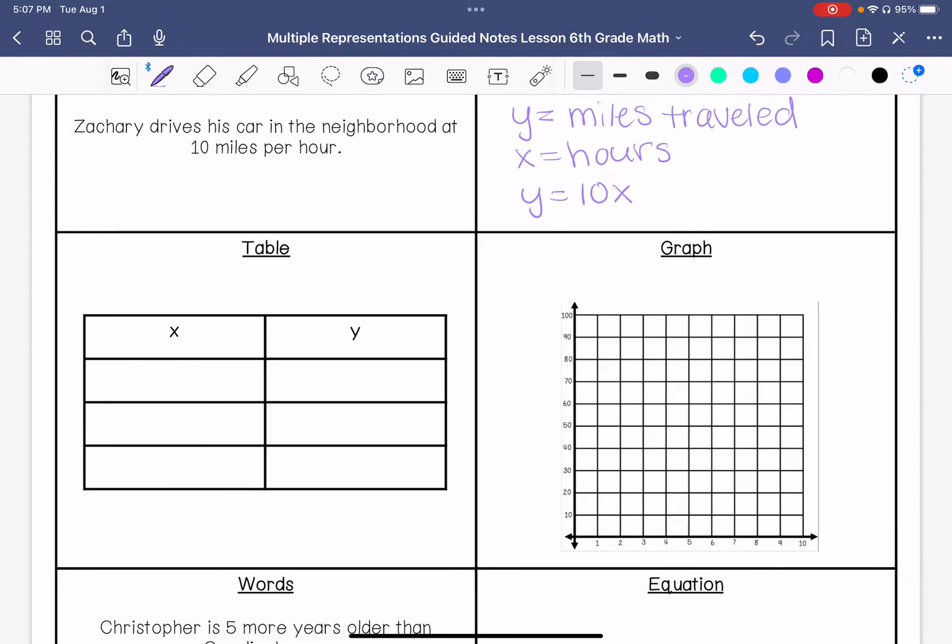So I'm going to fill out this data table. For 1 hour he traveled 10 miles, 5 hours he traveled 50 miles, 10 hours he traveled 100 miles. So if I write those as an ordered pair, it would look like this.